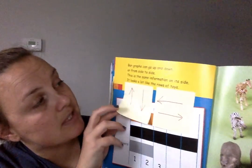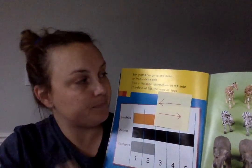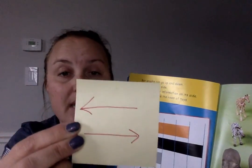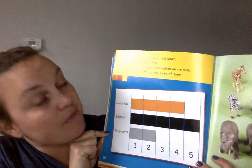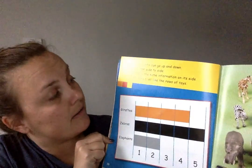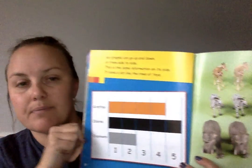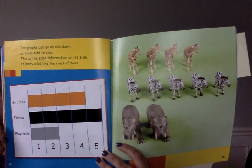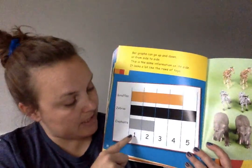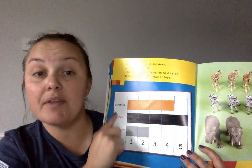Bar graphs can go up and down, or from side to side. This is the same information shown on its side — it looks a lot like the rows of toys. Again, we see the numbers along one side and the animal names on the other.